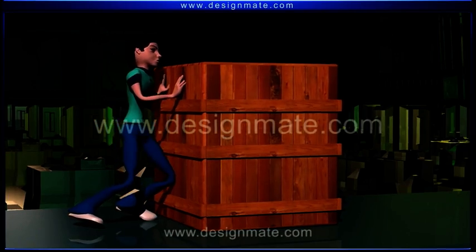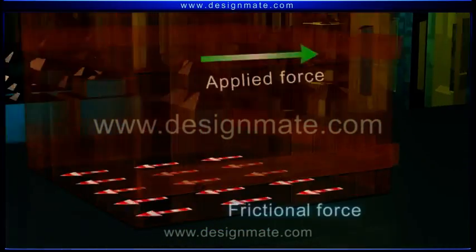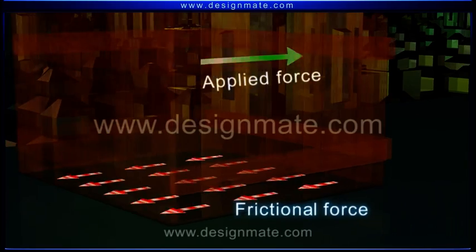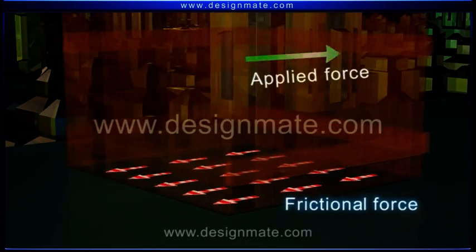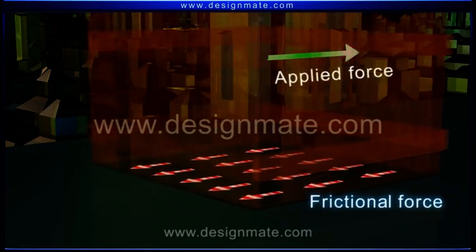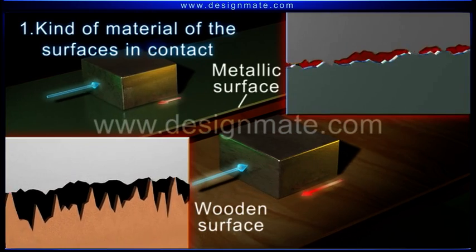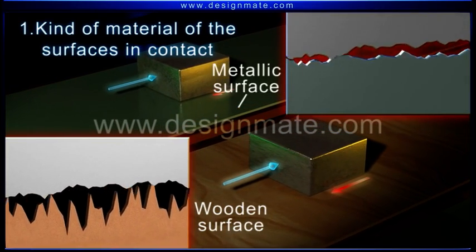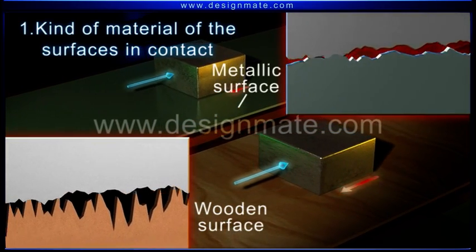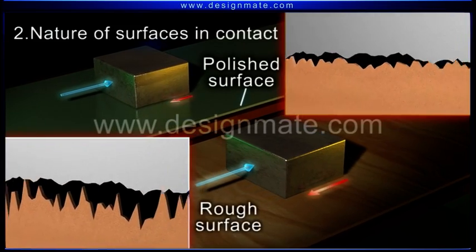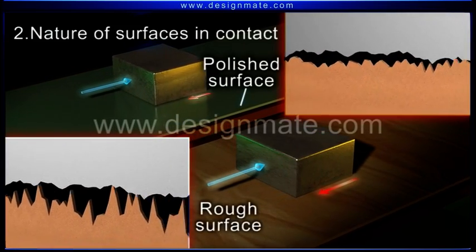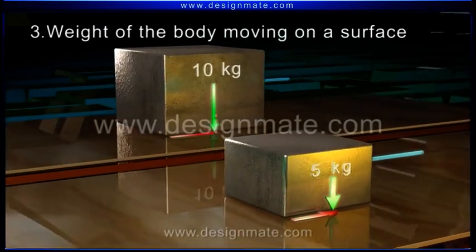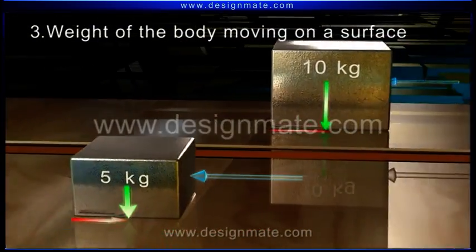We already know that friction is the force that opposes motion of one surface moving over another. We know that friction depends on: 1) the kind of material of the surfaces in contact, 2) the nature of surfaces in contact, and 3) the weight of the body moving on a surface.